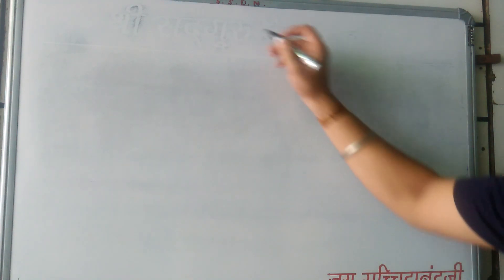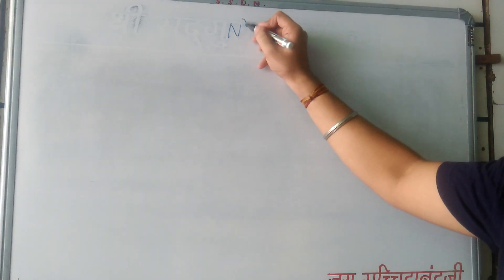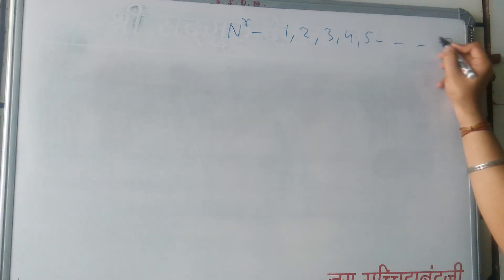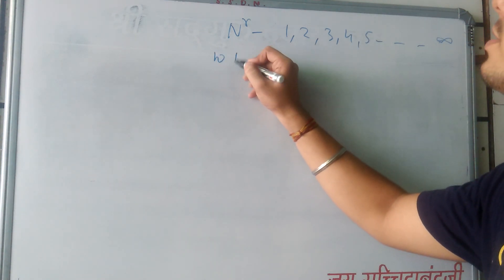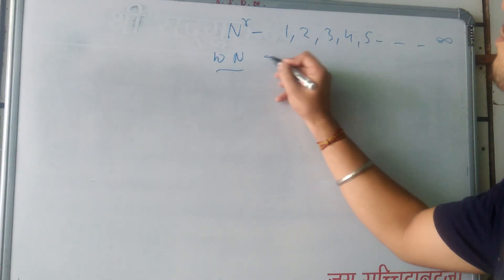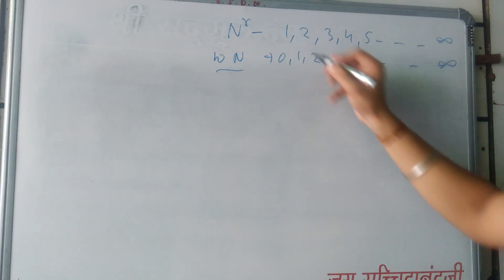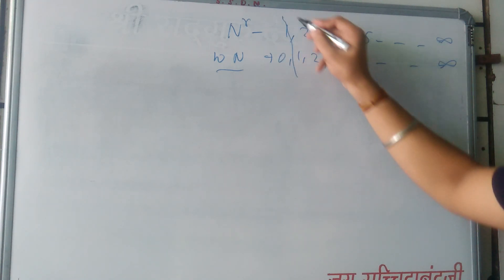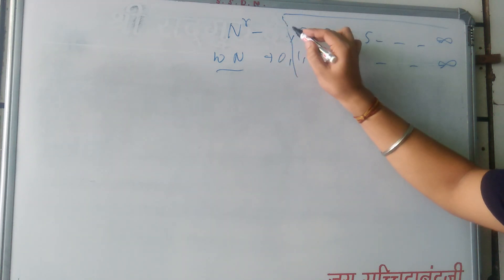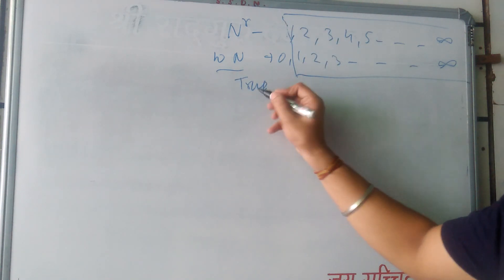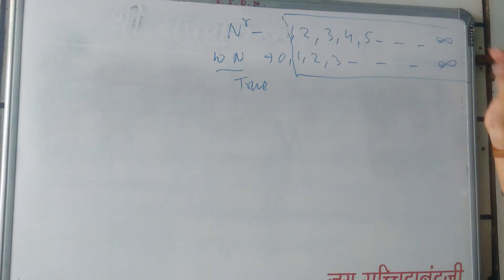Now the next question is true or false. First: every natural number is a whole number. What are natural numbers? 1, 2, 3, 4, 5 till infinity. What are whole numbers? 0, 1, 2, 3 till infinity. Every natural number is included in whole numbers, so this one is true. But if the converse is asked — is every whole number a natural number? — the converse would be false, because 0 is included in whole numbers but not in natural numbers.